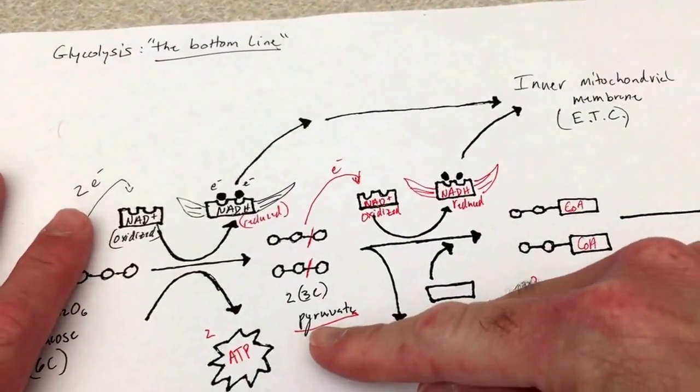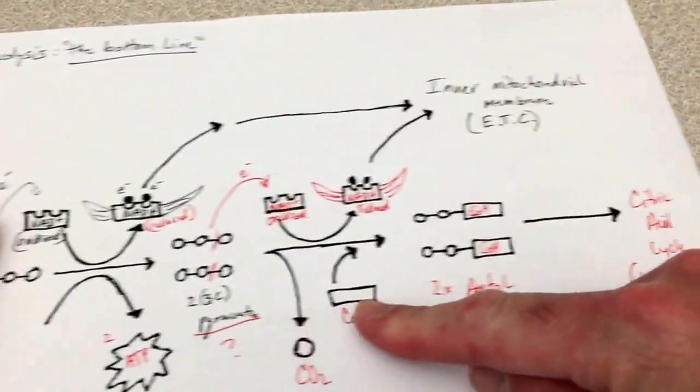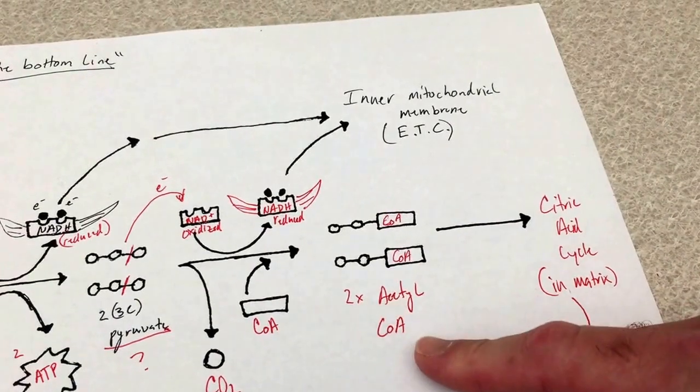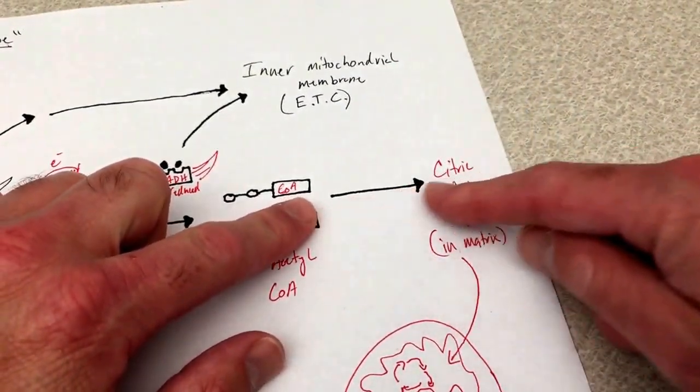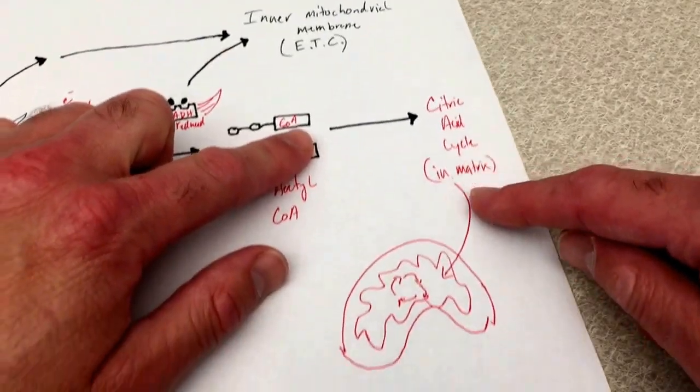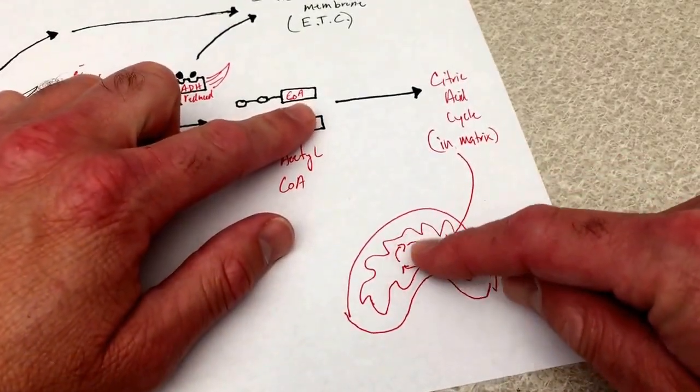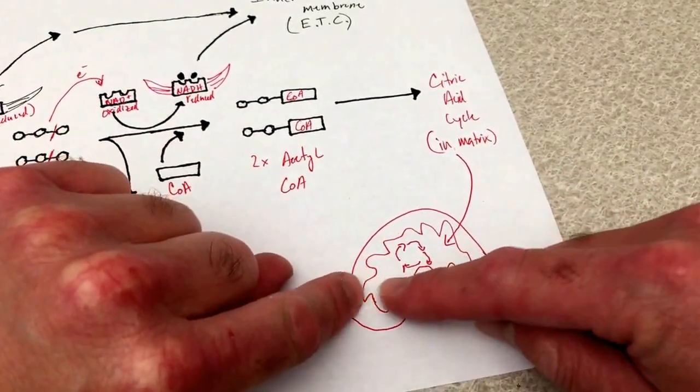We also learn that pyruvate has to get modified into a molecule called acetyl CoA, and this acetyl CoA goes off to the citric acid cycle, which is found in enzymes not embedded in the membrane.